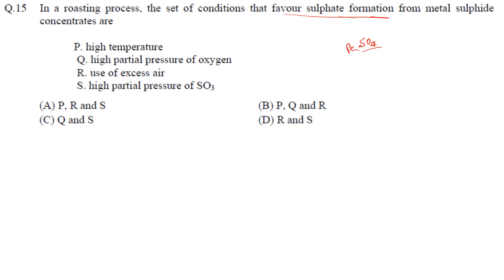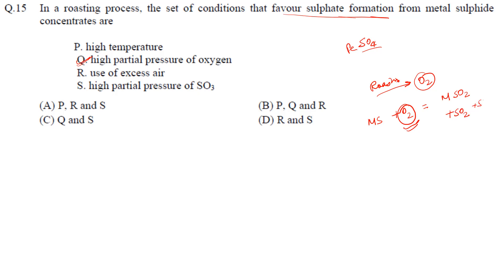In roasting, the process is carried out in the presence of oxygen. If we take a sulfide ore MS and react it with O2, it can form SO2 or SO3. So one requirement is oxygen — the partial pressure of oxygen should be higher. The fourth option mentions high partial pressure of SO3, which can also form as a product.